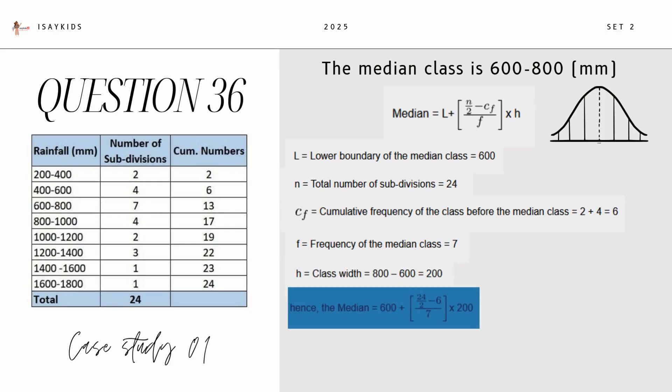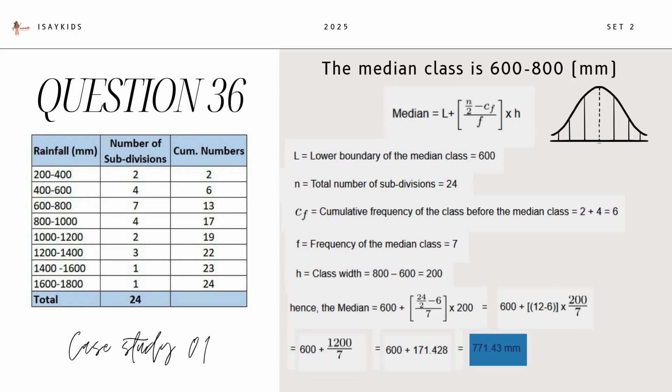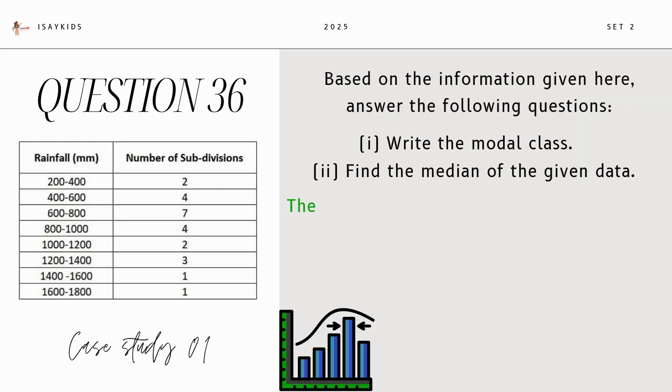And median would be 771.43 mm. Thus, the median of the given data is 771.43 mm.